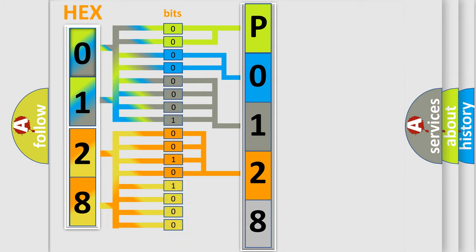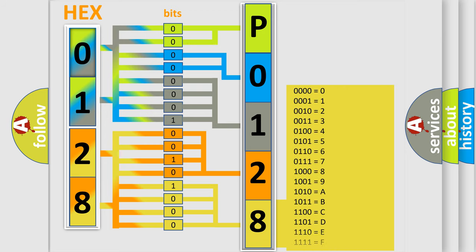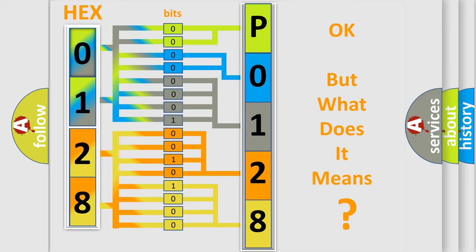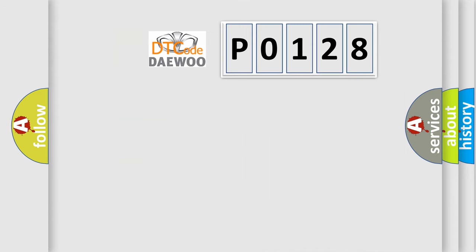A single byte conceals 256 possible combinations. We now know in what way the diagnostic tool translates the received information into a more comprehensible format. The number itself does not make sense to us if we cannot assign information about what it actually expresses.